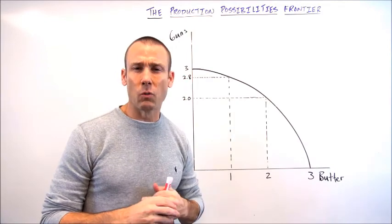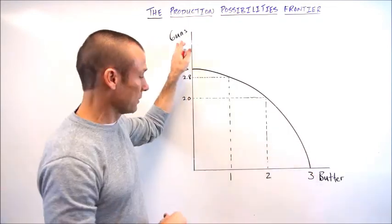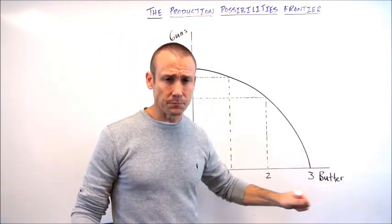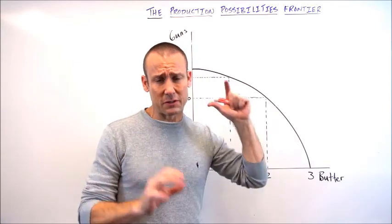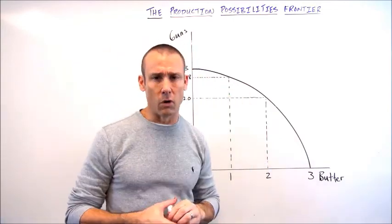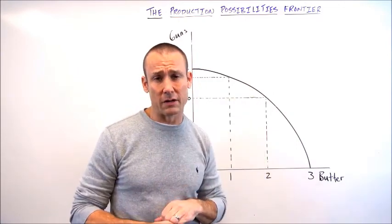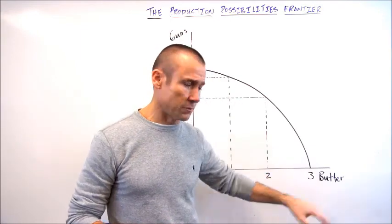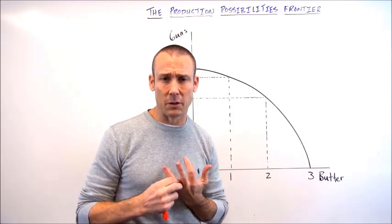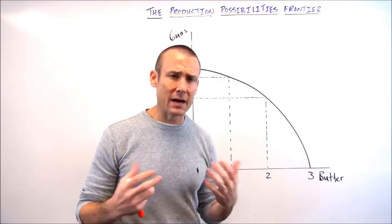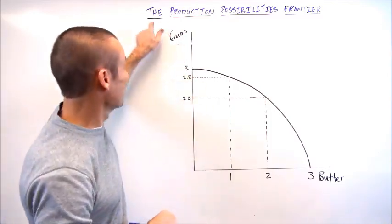Guns and butter are used because one of the few times a country truly has a decision between two groups of goods — one for military and one for food — is during a total war. When fighting an existential threat, a country really is choosing between military goods or food, and that's it. It's the classic example because it gives the stylized model real meaning.